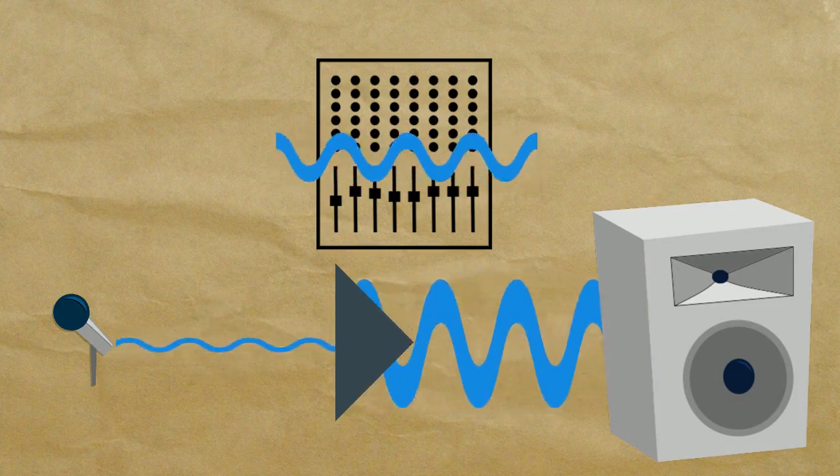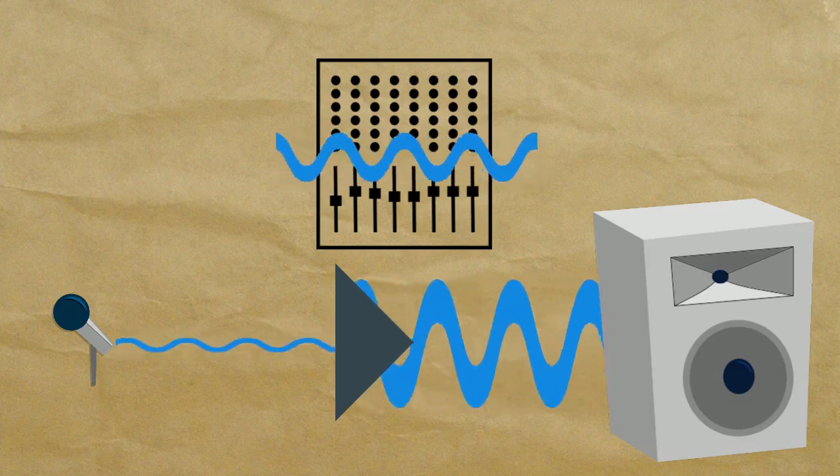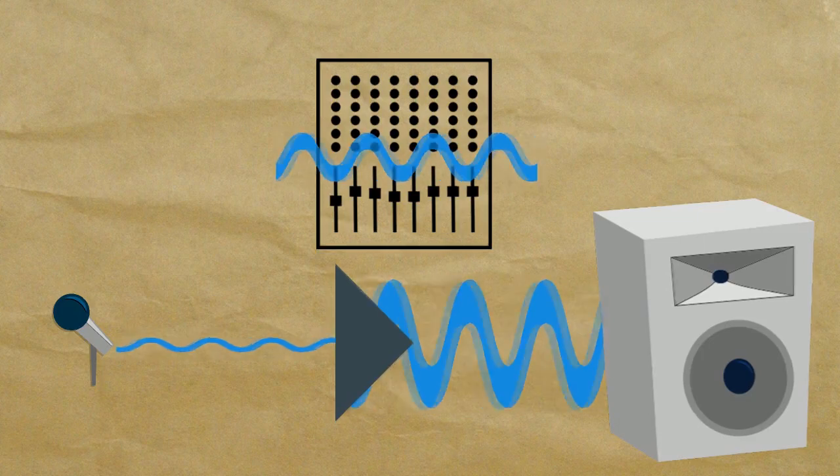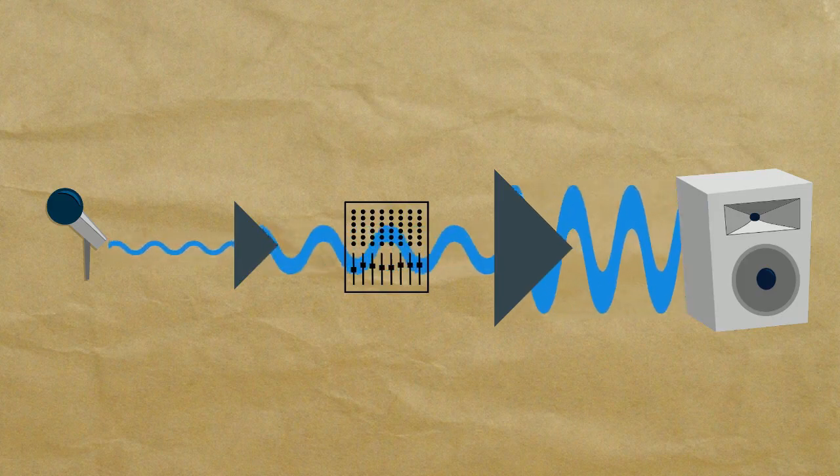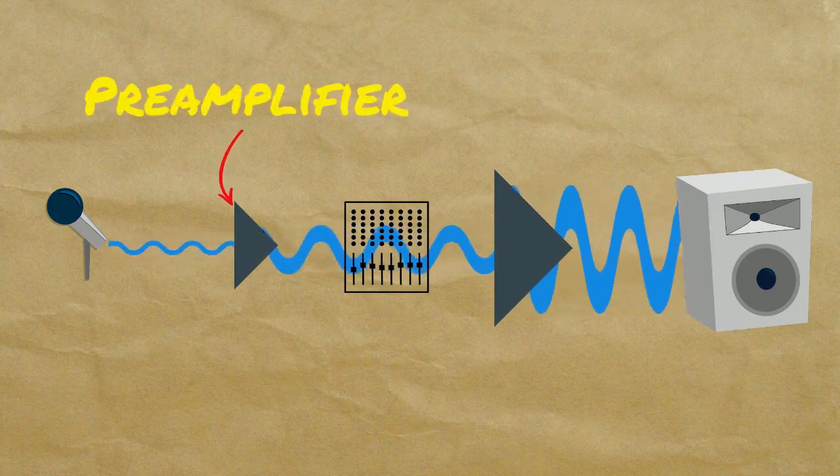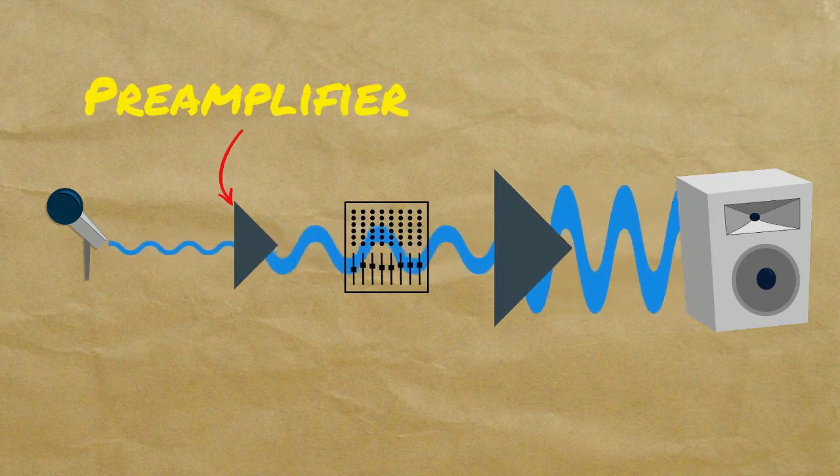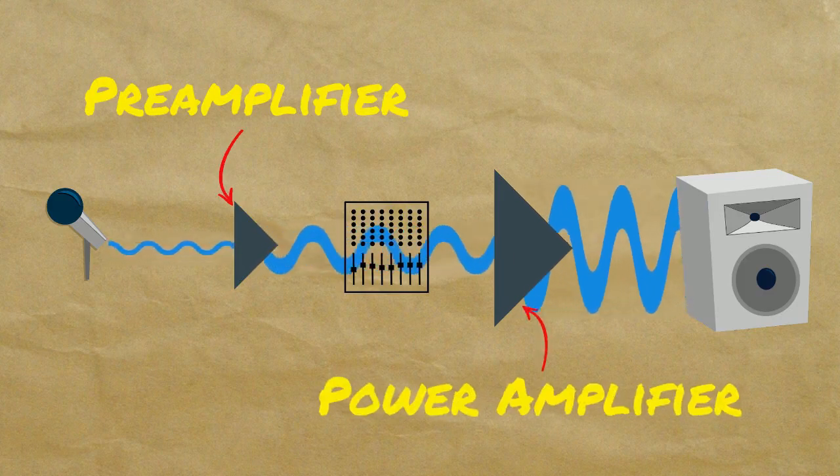This means that most sound systems have at least two amplifier stages: a high sensitivity, relatively low output amplifier called a preamp that takes the signal from mic level to line level, and then a second high output amplifier to bring the signal up to speaker level.